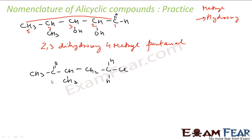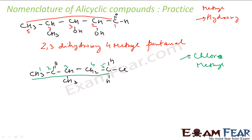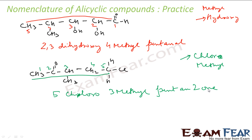Let's name this compound. The longest chain is this. This is the primary functional group — ketone. We should number in this fashion: one, two, three, four, five. Because the ketone should get the lower number. If you number the other way, the ketone gets position four, so this is the better numbering. Prefixes: one chlorine and one methyl. Chloro comes first alphabetically. Chlorine is at fifth position — 5-chloro. Methyl at third position — 3-methyl. Five carbons, so pent — all single bonds — and ketone at second position: pentan-2-one.